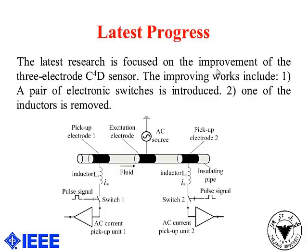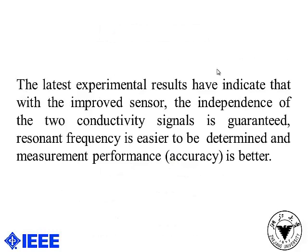At last, I will introduce the latest progress briefly. Our latest research is focused on the improvement of the three-electrode C4G sensor. The improving work includes: first, a pair of electronic switches is introduced; and second, one of the inductor inputs is removed. Some experiments have been carried out with the improved sensor. The latest experimental results show that with the improved sensor, independence of the two conductivity signals is guaranteed, the resonant frequency is easier to determine, and measurement performance is better.